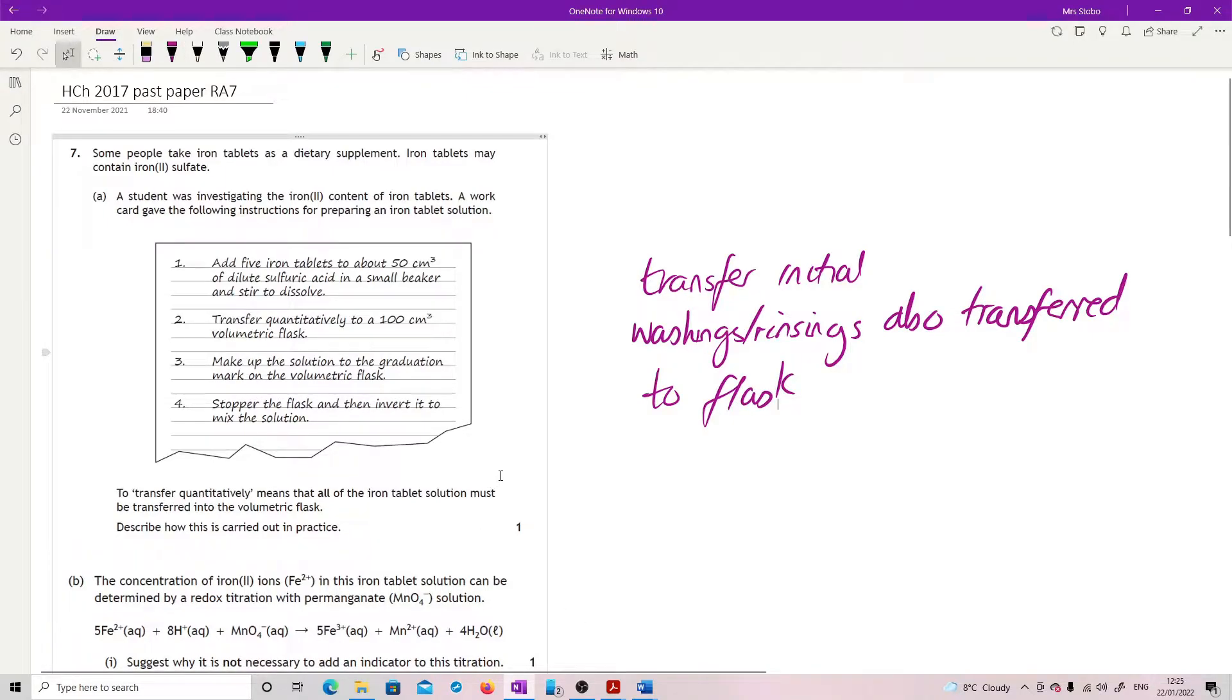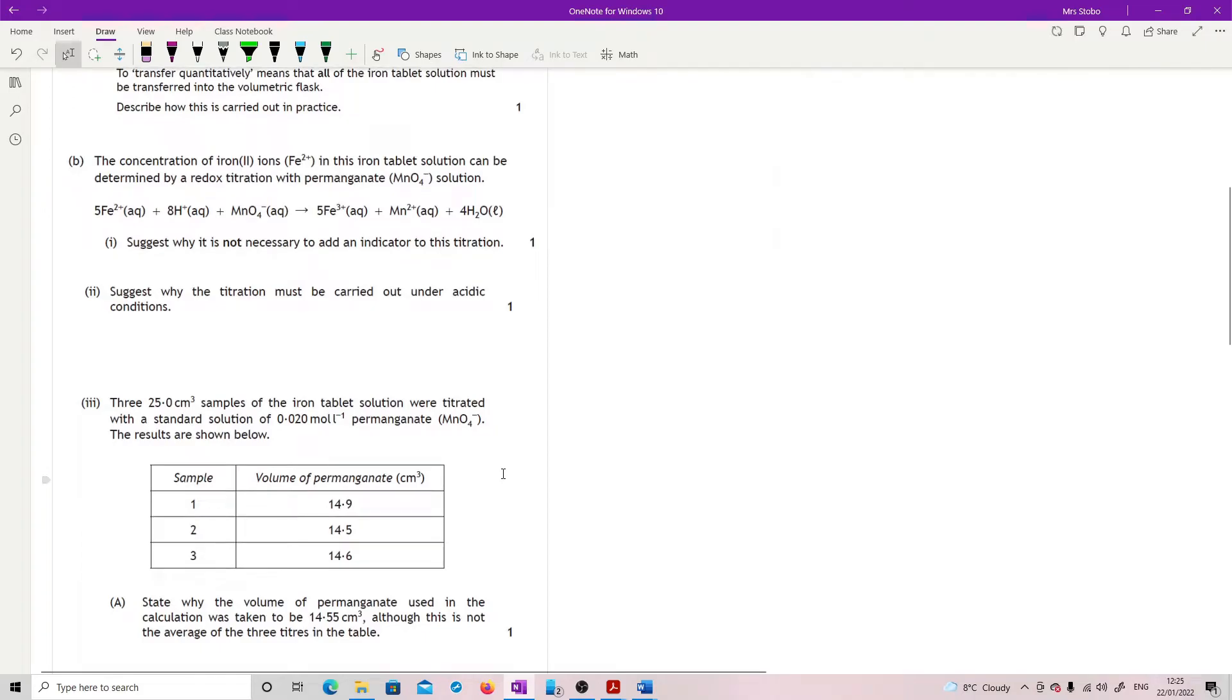The concentration of iron(II) ions in this iron tablet solution can be determined by redox titration with permanganate. Suggest why it is not necessary to add an indicator. You just need to know this - permanganate changes color in the reaction. So basically it's its own internal indicator, going purple to colorless.